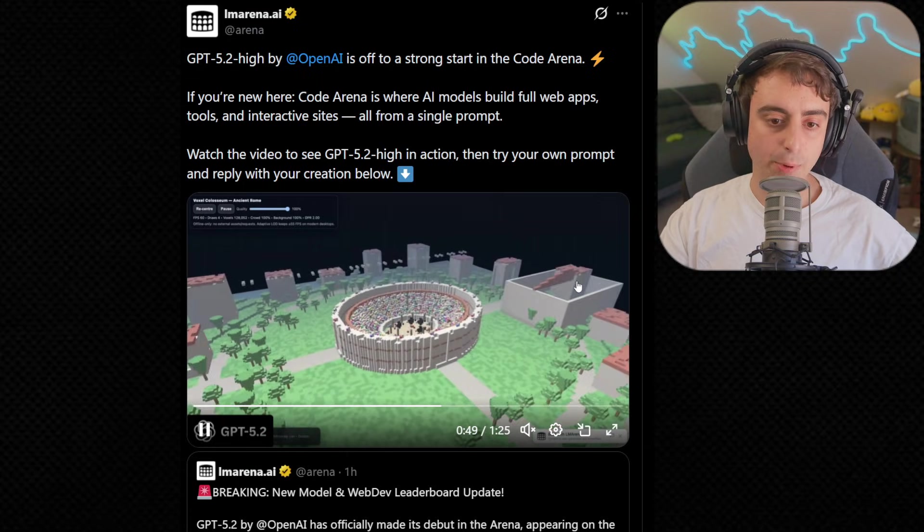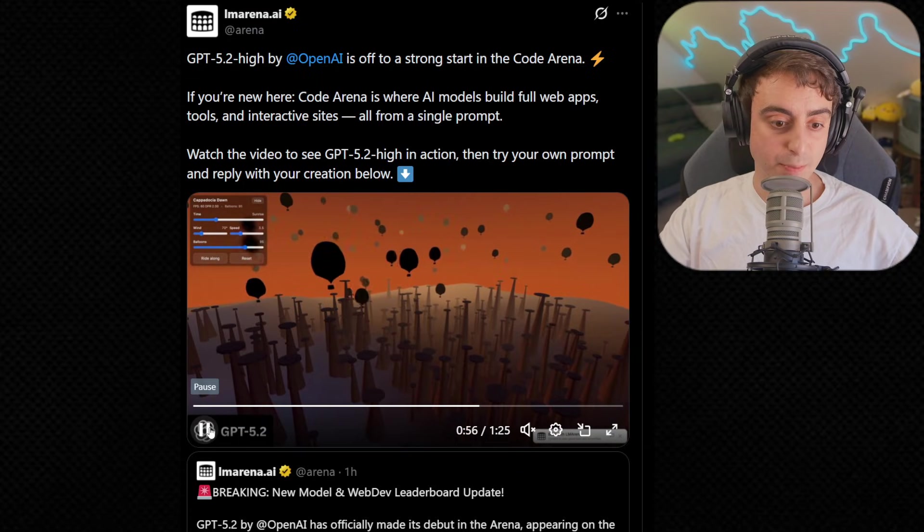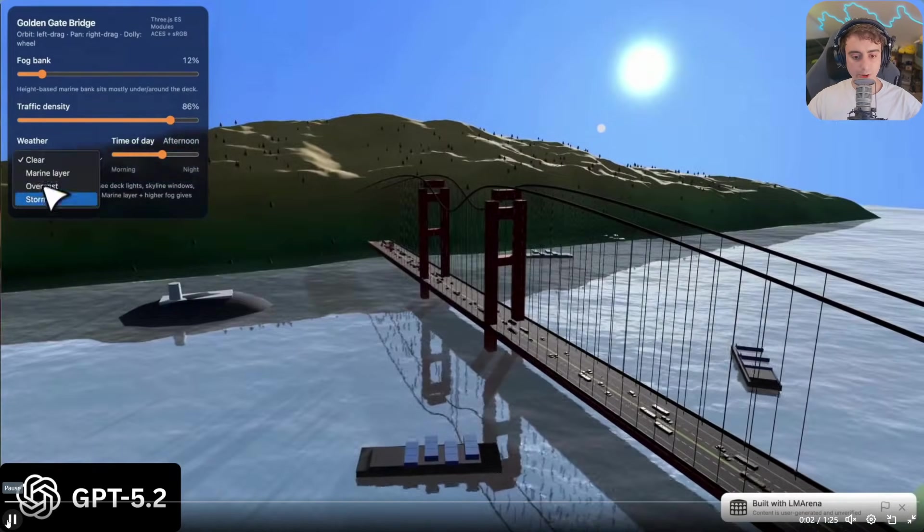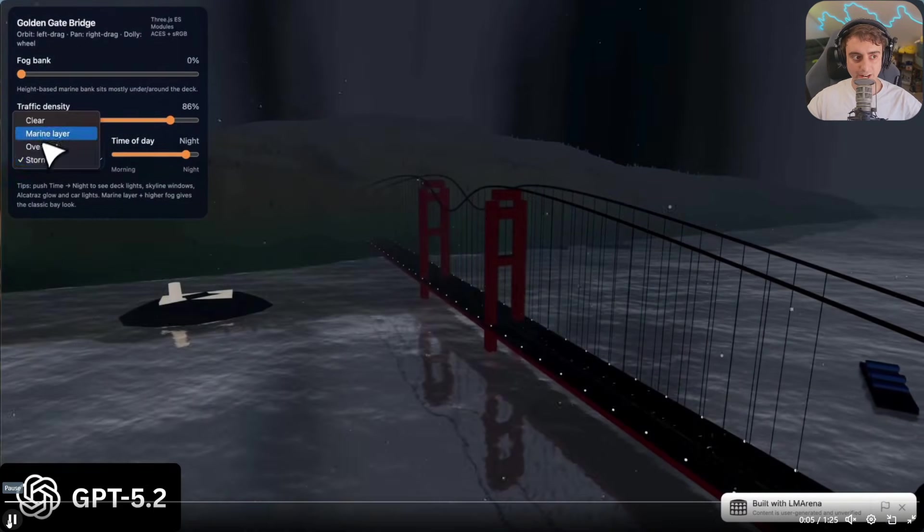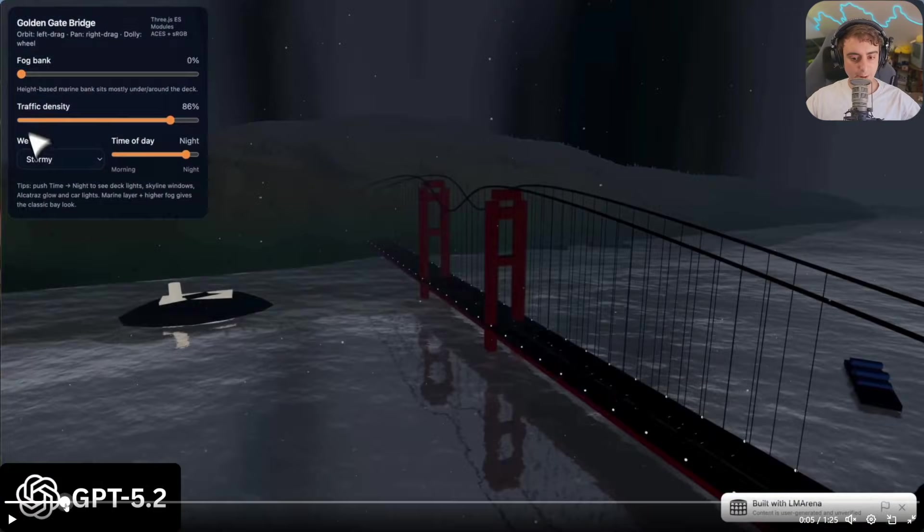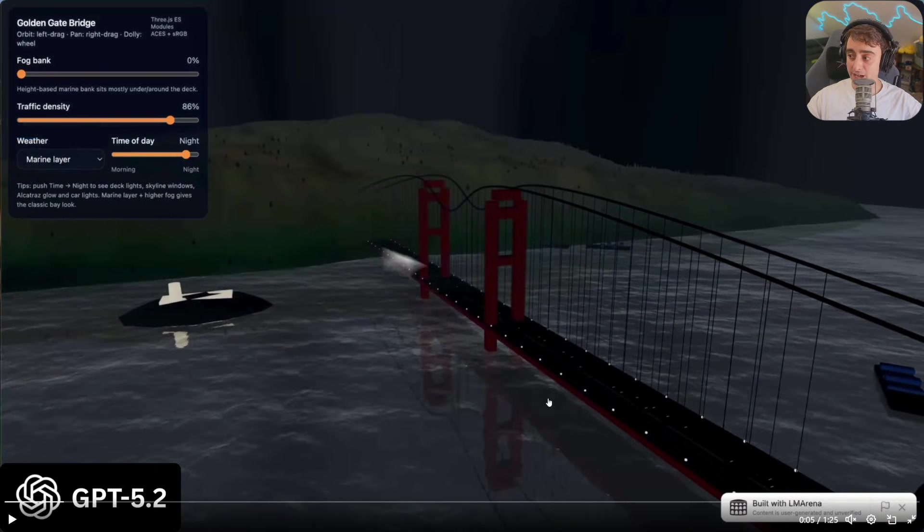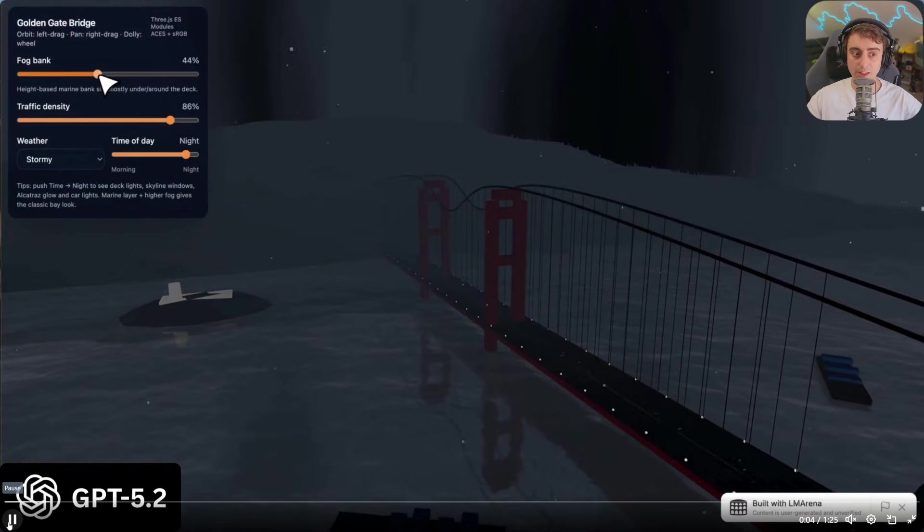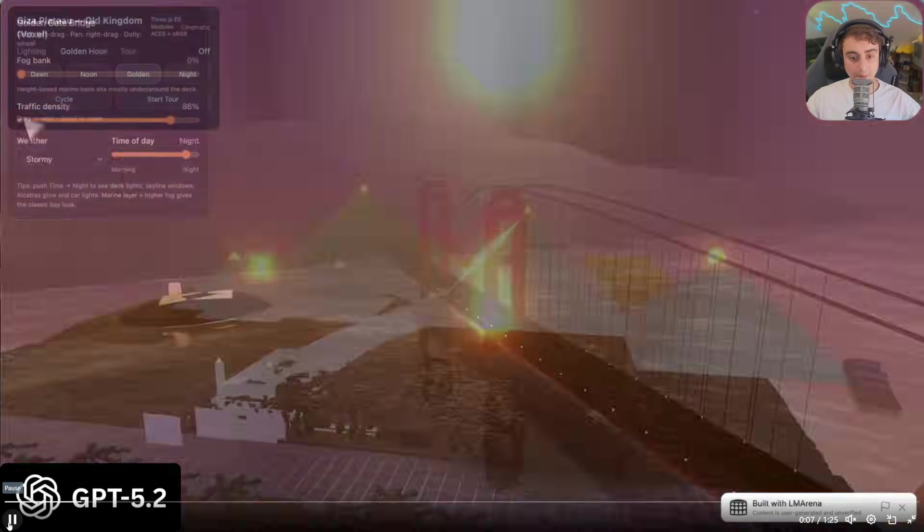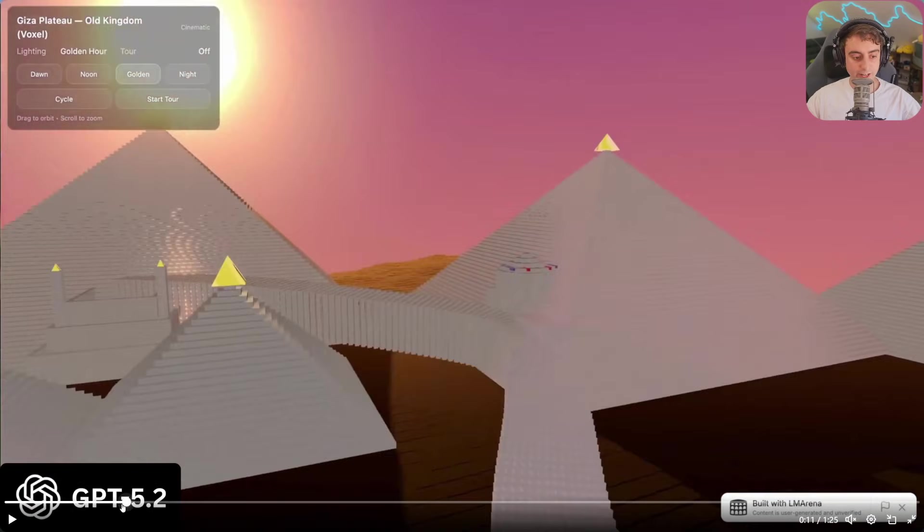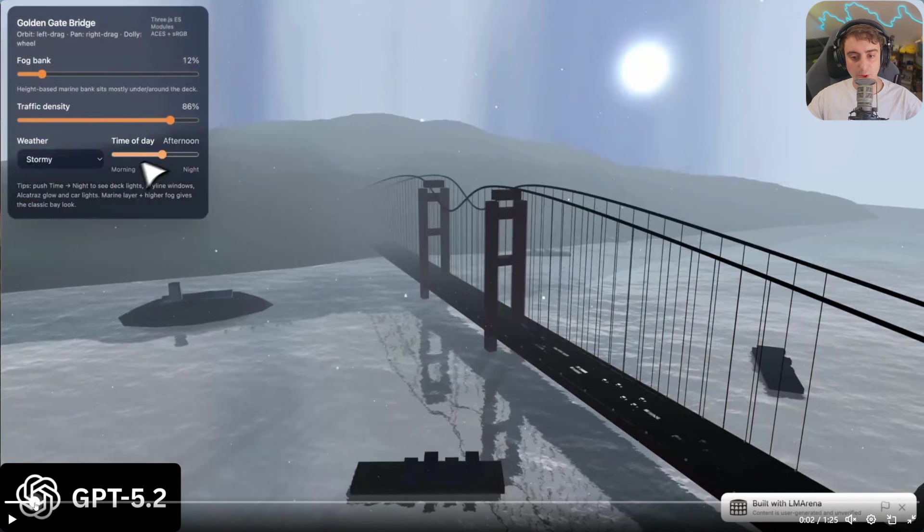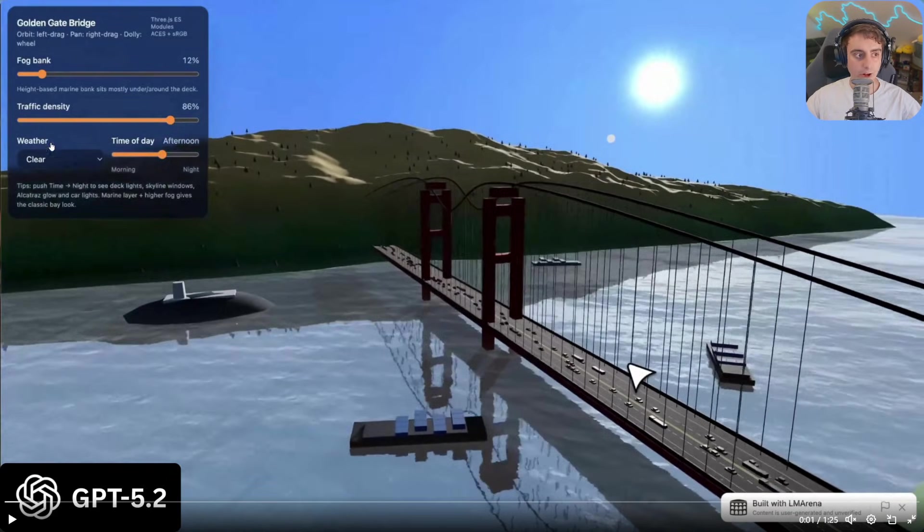LM Arena is posting some pretty impressive demos. Various 3D coding pieces made with 5.2. This model is really surprising me already with its capabilities. This is a 3D model of the Golden Gate Bridge. We even have different weather settings, time of day, traffic, density, and I mean, you saw the reflections and the waves going on in the water, right? Actually, it doesn't look too bad. This is definitely a lot better than what I was expecting. I know Gemini 3 Pro is really good, but this might actually be about just as good. And again, its ability to do all of this with just code.